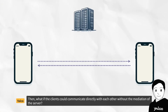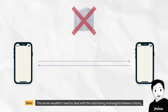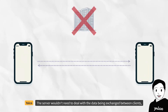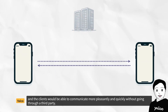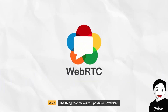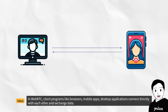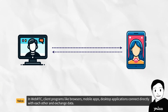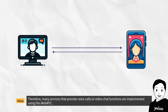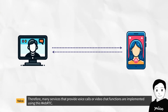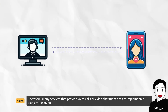Then, what if the clients could communicate directly with each other without the mediation of the server? The server wouldn't need to deal with the data being exchanged between clients, and the clients would be able to communicate more pleasantly and quickly without going through a third party. The thing that makes this possible is WebRTC. In WebRTC, client programs like browsers, mobile apps, and desktop applications connect directly with each other and exchange data. Therefore, many services that provide voice calls or video chat functions are implemented using WebRTC.